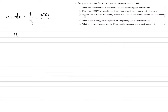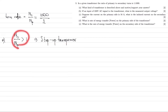Remember that a turns ratio classifies for us the type of transformer we're dealing with. Whenever the turns ratio is larger than one, this means the transformer at hand is a step-up transformer. So this is what this is — that's the answer to Part A. They asked us what kind of transformer is described above and to motivate the answer. This is a step-up transformer because the turns ratio is larger than one.